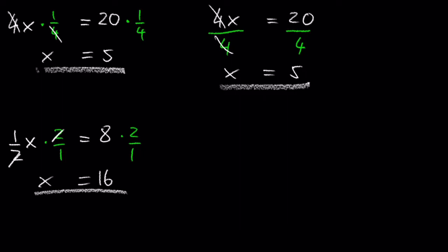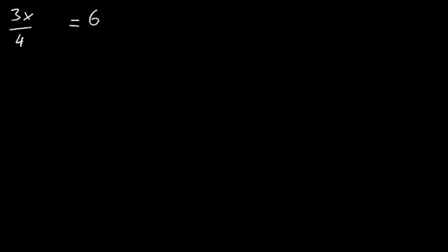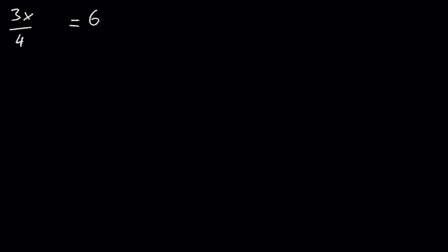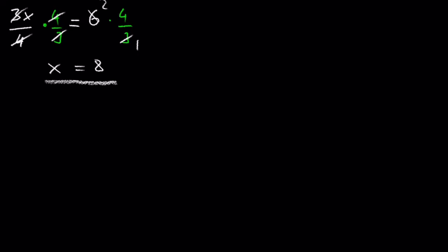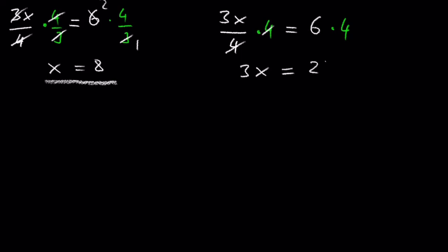Of course, you can also just multiply by 2 on both sides. Let's try: 3x over 4 is equal to 6. We can multiply by 4 on both sides, then divide by 3 on both sides, and we get x is equal to 8.